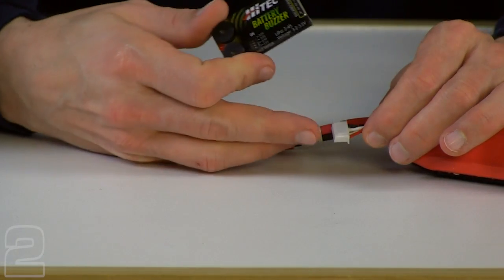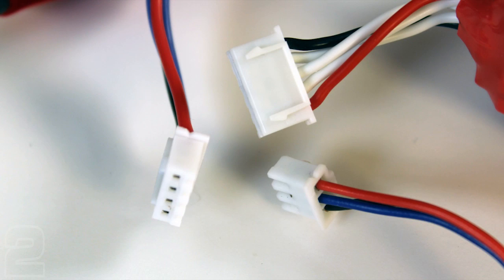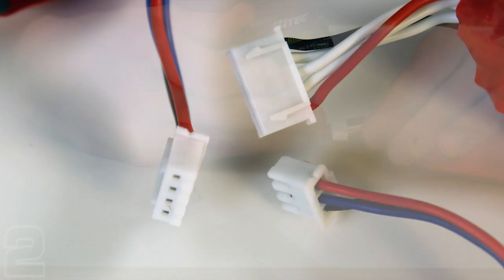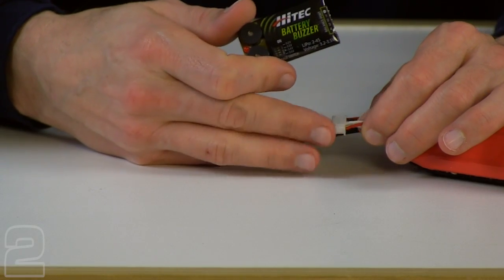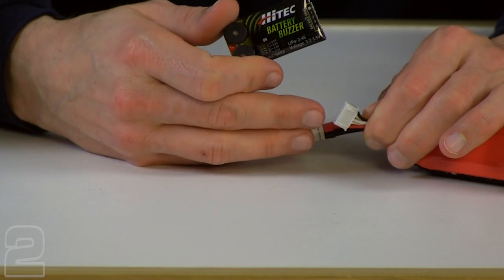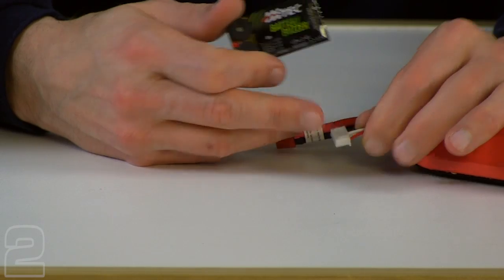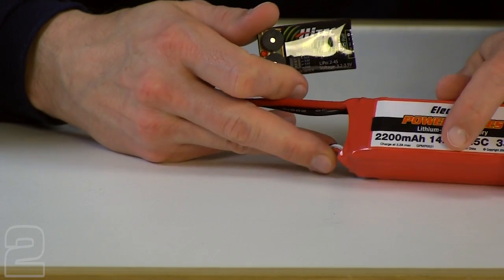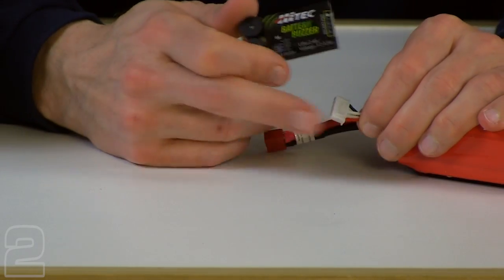Since it's 2.54 pin pitch it's going to accept JST, XH, Hyperion PolyQuest battery type connectors. So by far the most common is what you see listed on your balance boards is JST slash XH and that's seen on most OEM batteries and a number of batteries out in the industry.